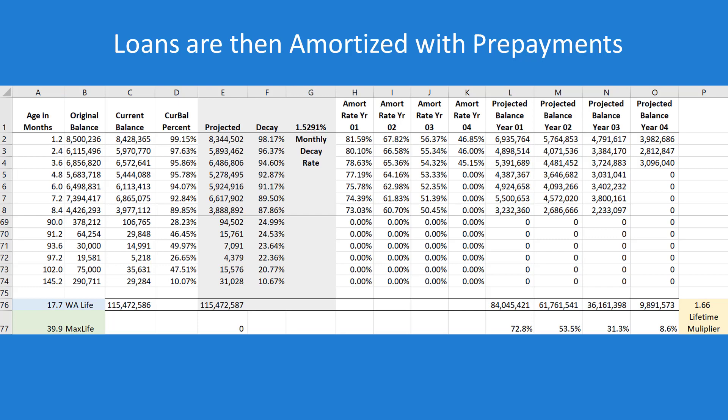Why is the decay rate important? Because we have to take your current loan balance — in this case $115 million — and CECL asks: what are the losses over the life of that loan? So we have to project forward balances using the decay rate that's actually inside the portfolio. That's step number one.